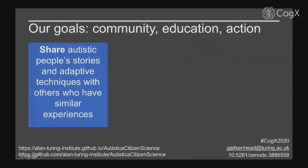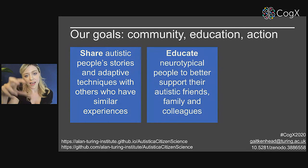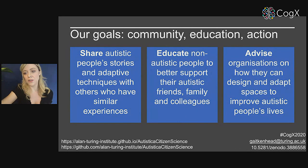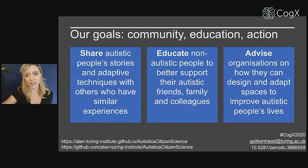We have three goals we want to achieve with this platform: to share autistic people's stories and adaptive techniques with others who have similar experiences; to educate neurotypical people to better support their autistic friends, families, and colleagues; and to advise organizations on how they can design and adapt spaces to improve autistic people's lives. Each one of these goals is directly impacting the relevant community.